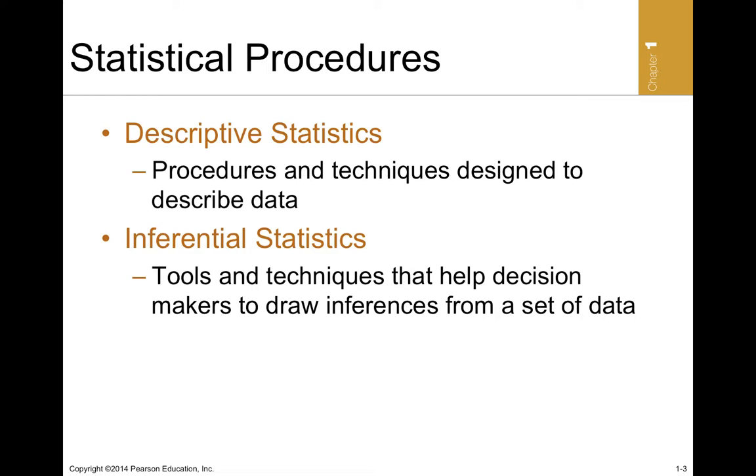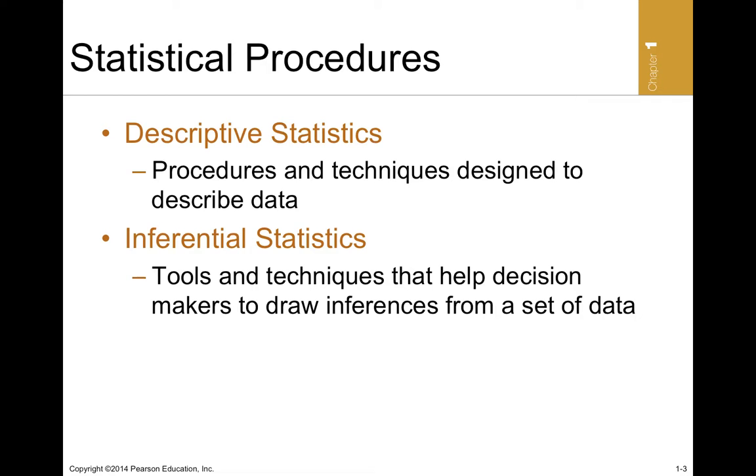Descriptive statistics, as the term suggests, allows us just to describe the data that we've collected—whether the data is fairly broad in scope with a lot of variation, or narrow in scope with much less variation, or whether some numbers occur very frequently and some less frequently. Inferential statistics, on the other hand, allows us to look at that data and create information that we could use for decision-making. In other words, we infer, we draw conclusions from the data set.